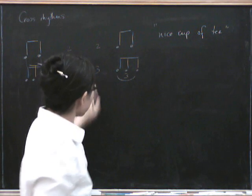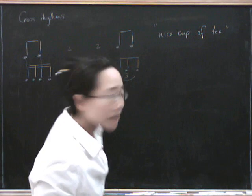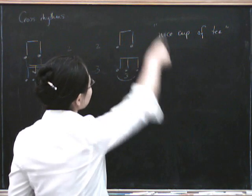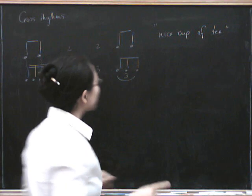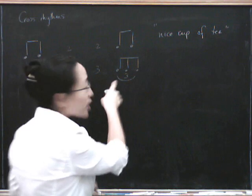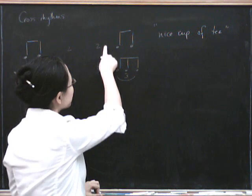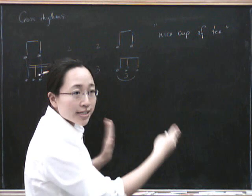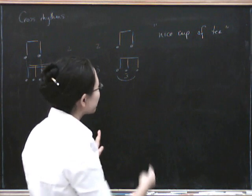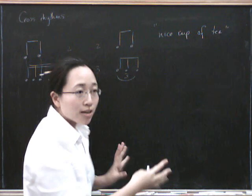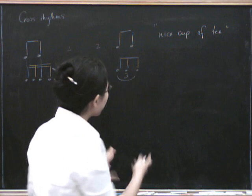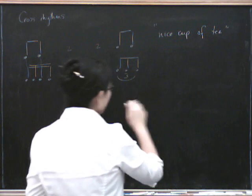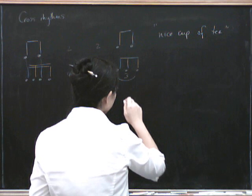Well, it's the same as the Chinese remainder theorem, actually. In order to work out how this rhythm really needs to go, you have to find the lowest common multiple of the two numbers to divide it up exactly into two and three. You need the smallest number divisible by both two and three, which is of course six.